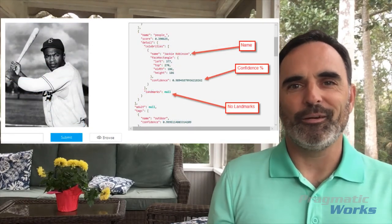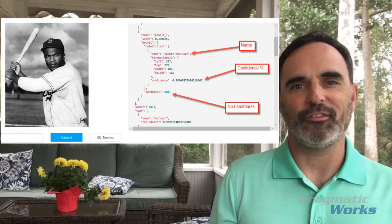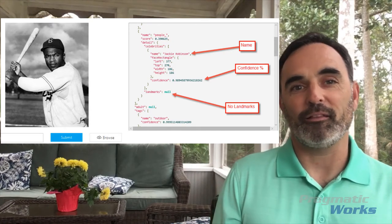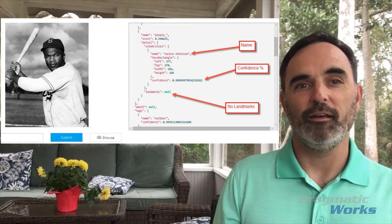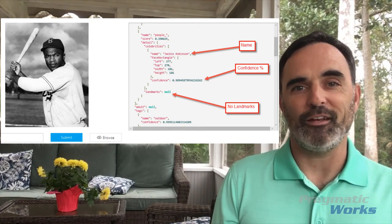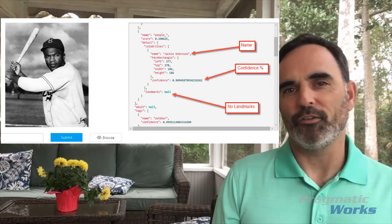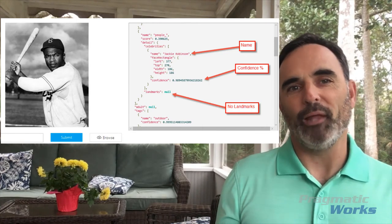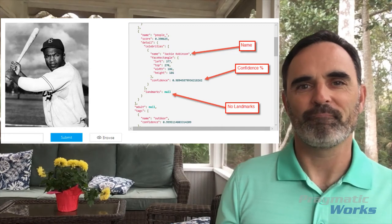One more example I did here was uploading a picture of a famous person. The API correctly determined that this was Jackie Robinson with a very high percentage of confidence, and it also correctly understood that there were no landmarks in this image.